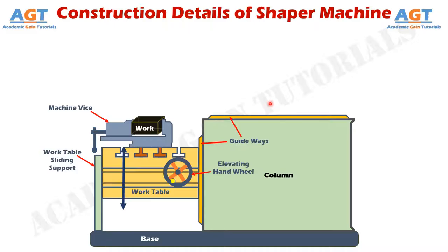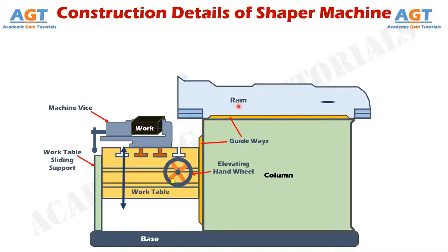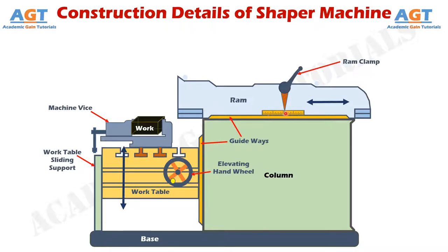Above the column there is the ram of the shaper machine. This ram can move forward and backward sliding on the guideways above the column. Connected to the ram is a ram clamp, which is used to set the position of the ram before starting the shaping operation. There is scaling or graduation on it which helps the ram clamp in positioning the ram accurately before starting the operation.